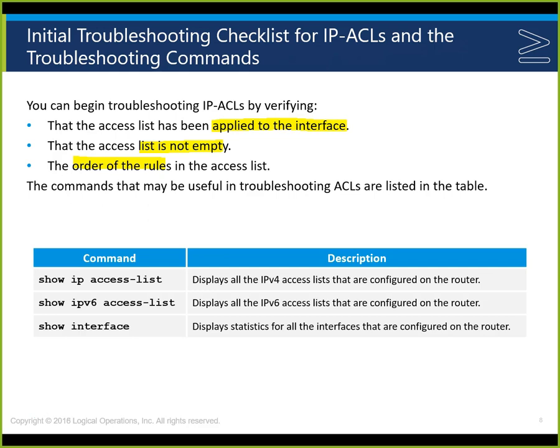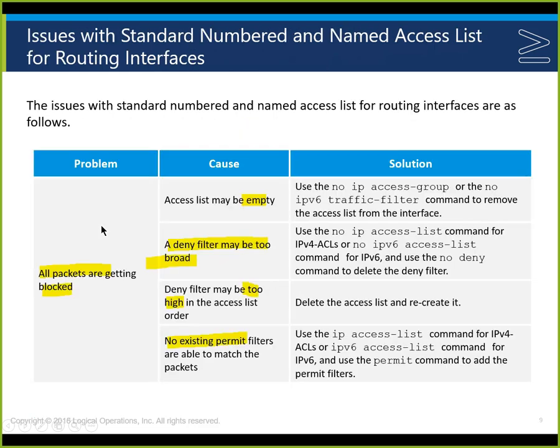'Show ip access-list' displays the IPv4 lists configured, and 'show ipv6 access-list' displays the IPv6 ones. 'Show interface' shows statistics for all configured interfaces on the routers. Show commands are one of the primary troubleshooting tools along with debug. Debug tells us step-by-step what the router is actually doing — what it's sending and what it's receiving.